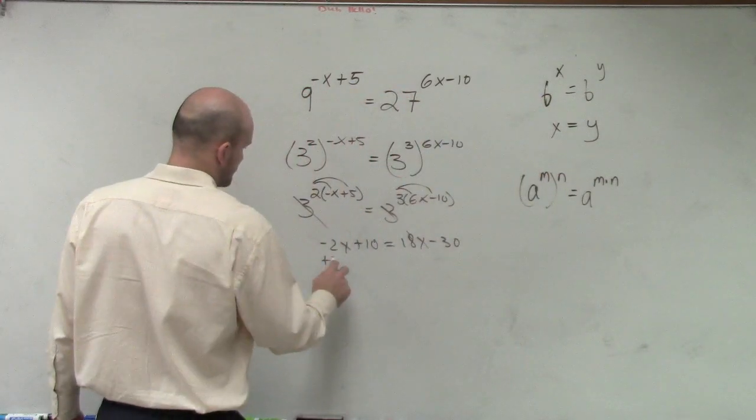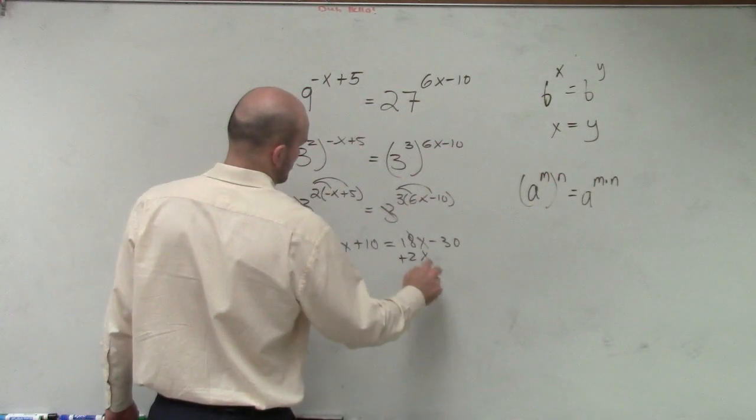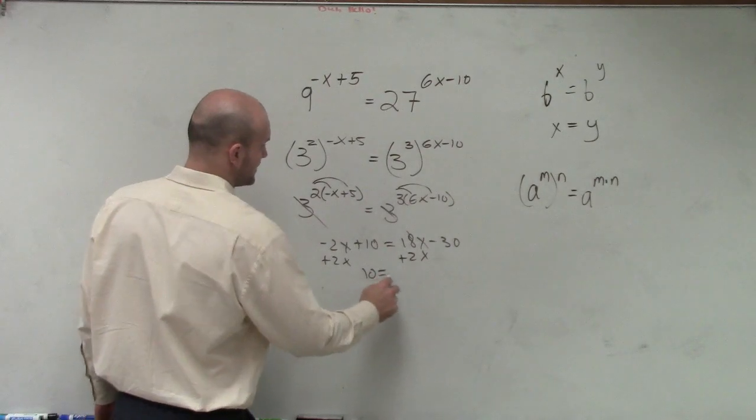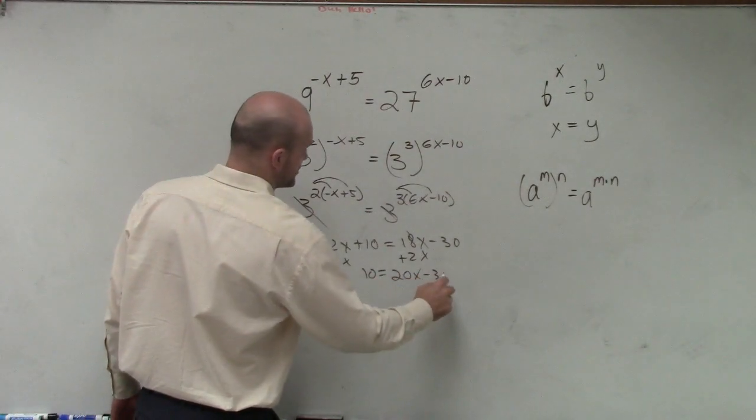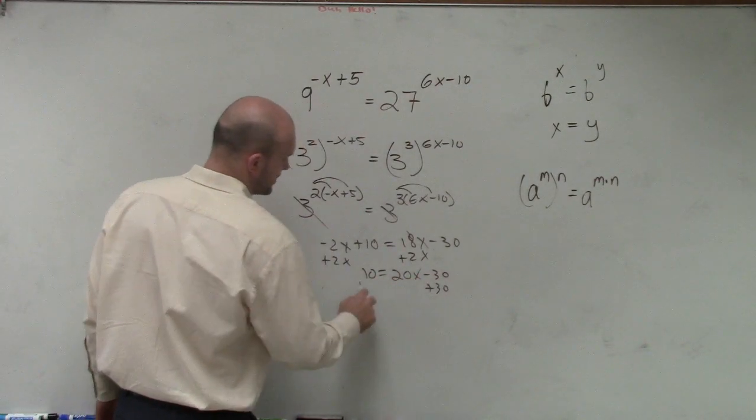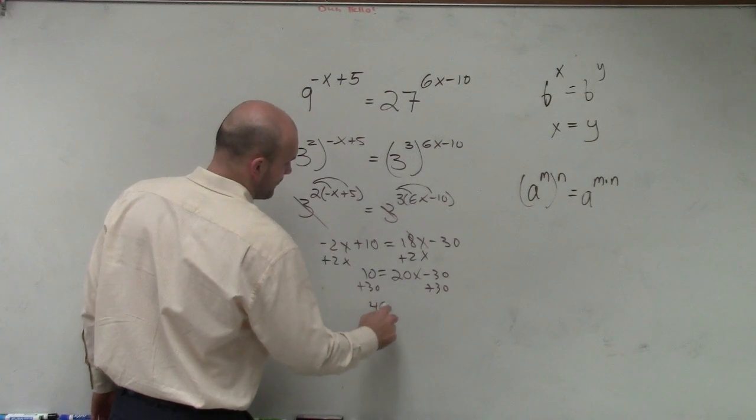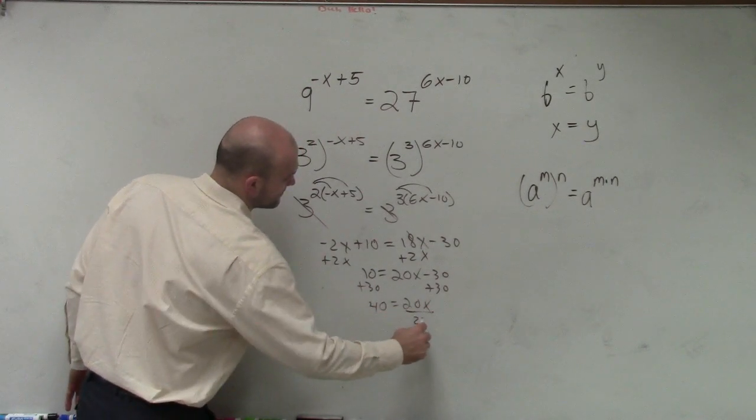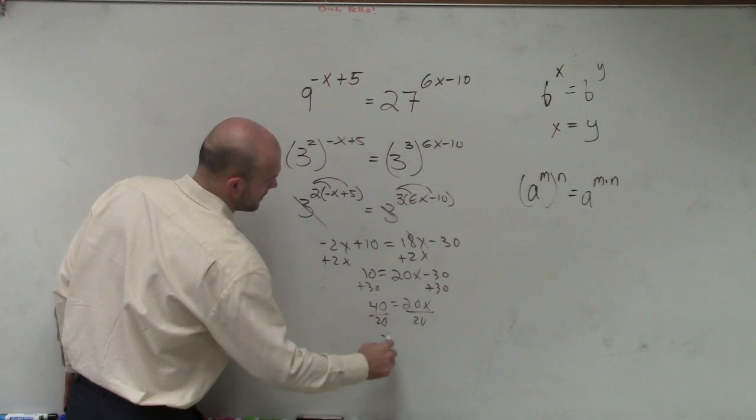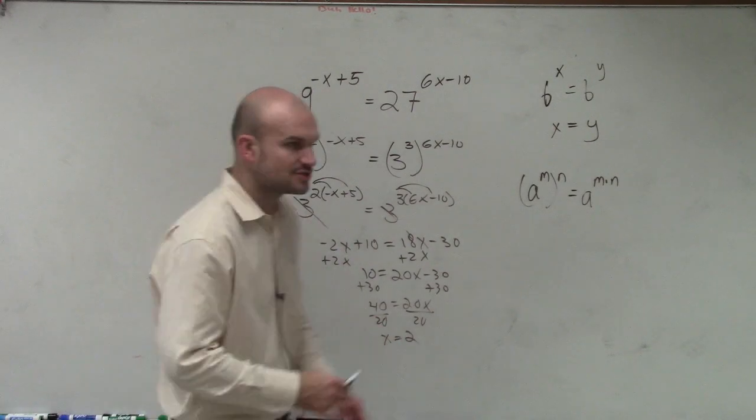So I'll add 2x. So therefore, I get 10 equals 20x minus 30. Add 30. 40 equals 20x divided by 20. x equals 2.